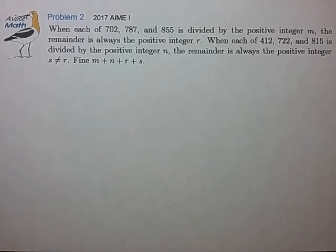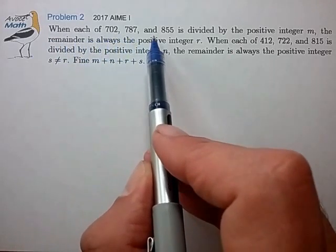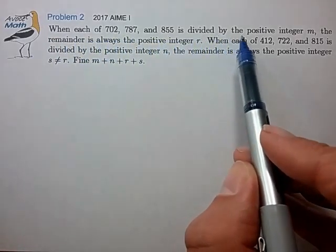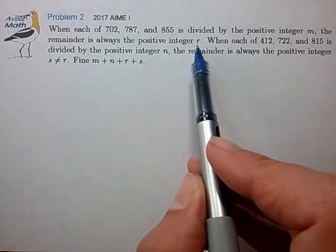Hi, this is problem 2 from the 2017 AIME. When each of 702, 787, and 855 is divided by the positive integer m, the remainder is always the positive integer r.